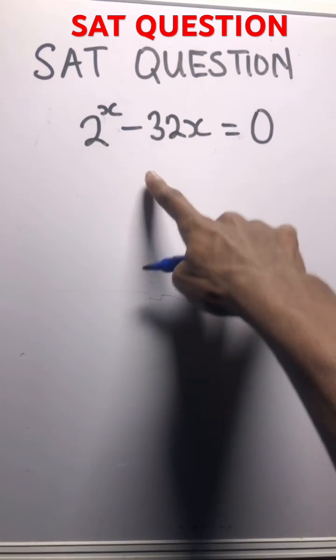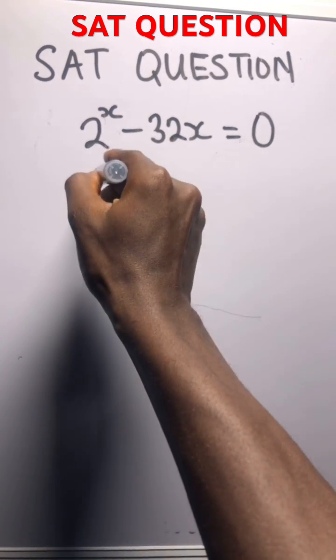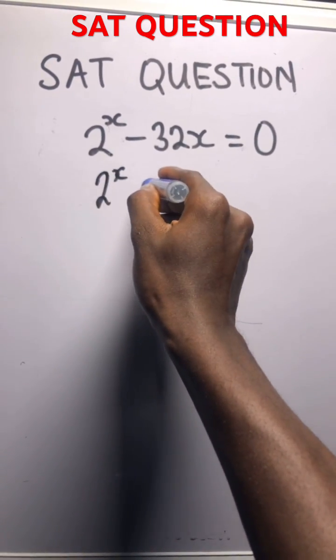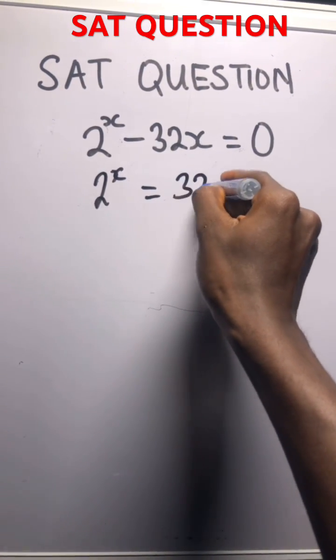So first things first, bring this over. It becomes 2 to the power of x rather, equals 32x.